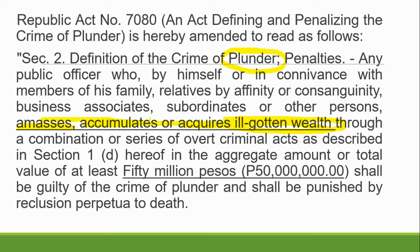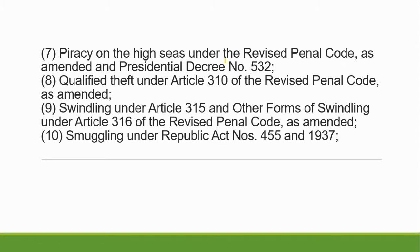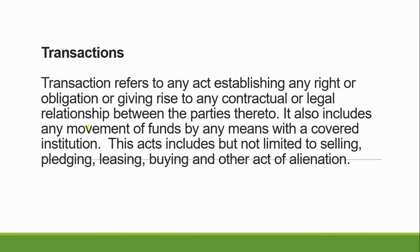This came out in the board exam — when do you consider a case as plunder versus graft and corrupt practices? The amount involved is material. Any public officer who, by himself or in connivance with members of his family, relatives by affinity, business associates, or other persons, amasses, accumulates, or acquires ill-gotten wealth through a combination or series of acts in an aggregate amount of at least 50 million pesos — that is plunder. If less than 50 million, the case will be graft and corrupt practices (RA 3019), but both are dirty money, and if you transact it, there is money laundering.